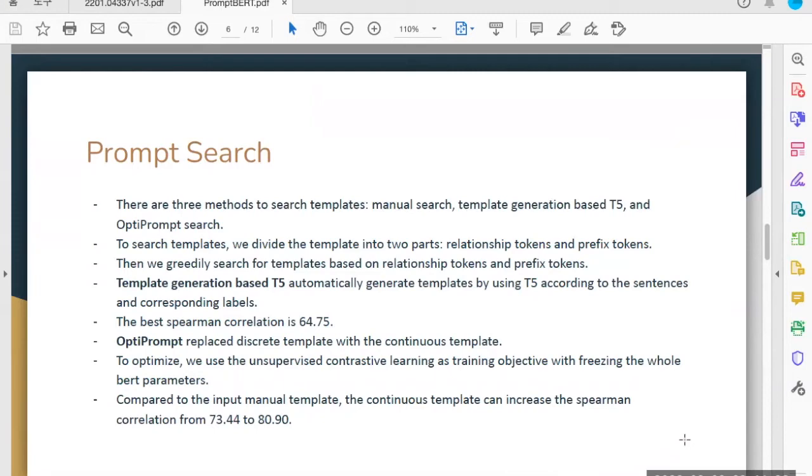For template generation based on T5, there is a method to automatically generate templates according to the sentences and their labels. The results were better than the manually searched templates, but the main issue here is the lack of label tokens. One way to solve the problem is to transform the sentence embeddings to a text classification task by classifying the definition sentence to its word. Based on this, in this research they tried to generate 500 templates and after evaluation the best Spearman correlation is 64.75.